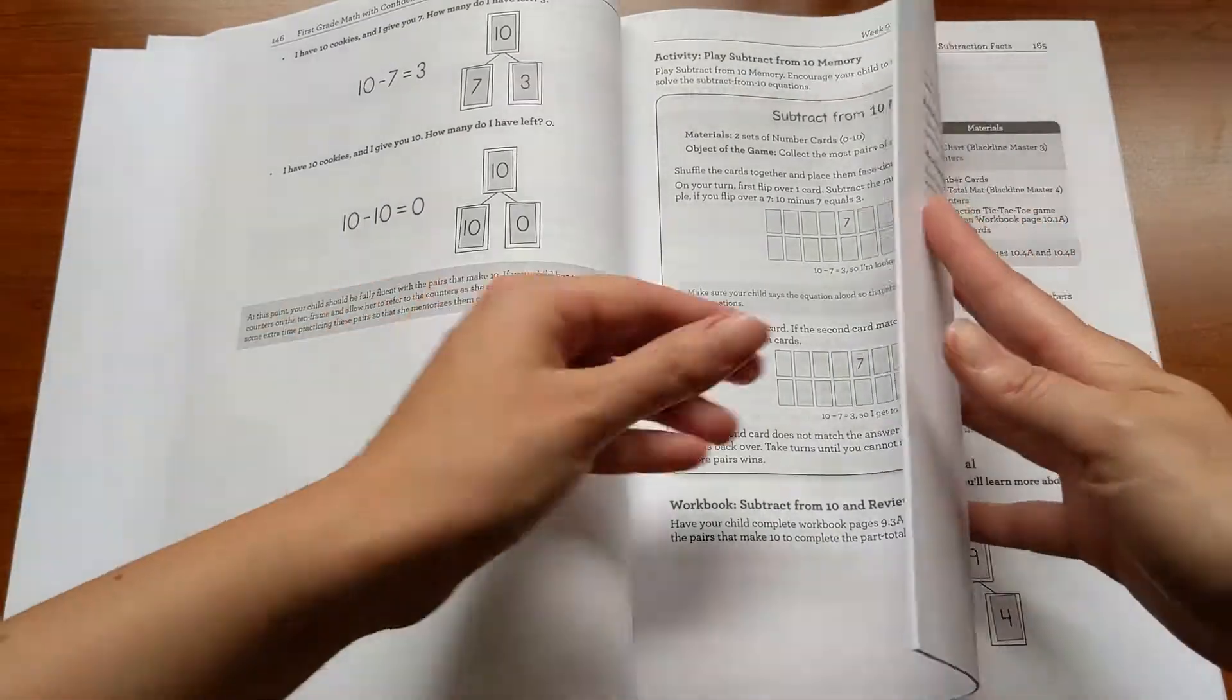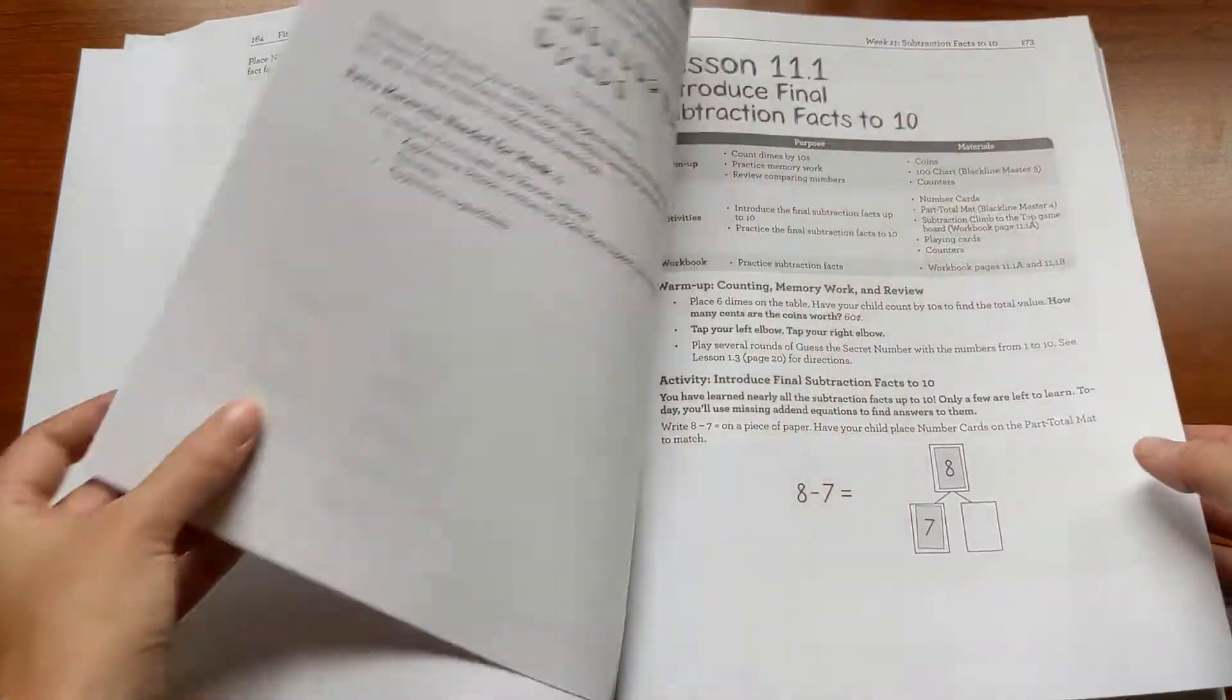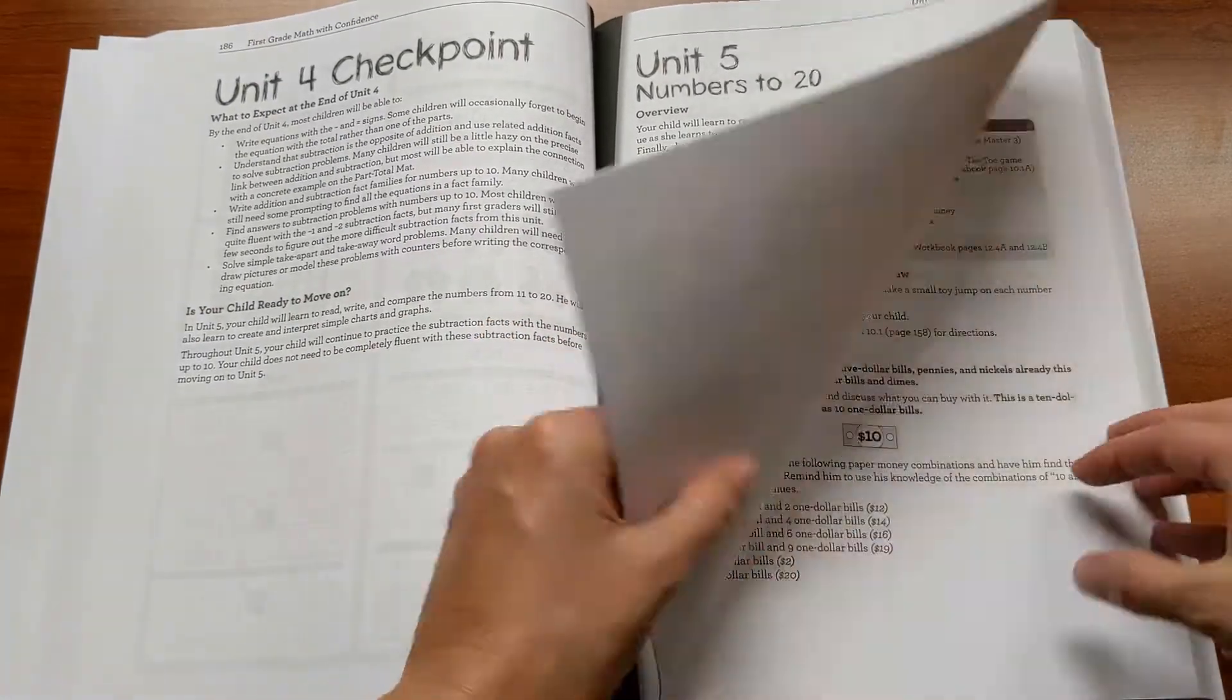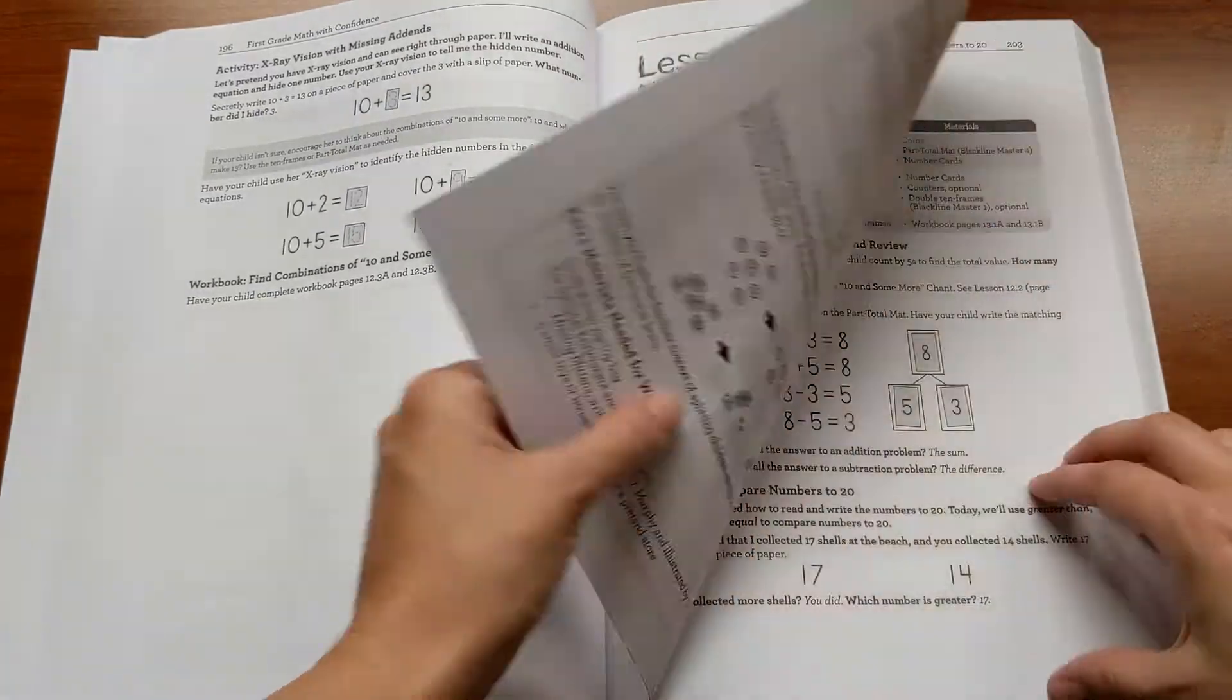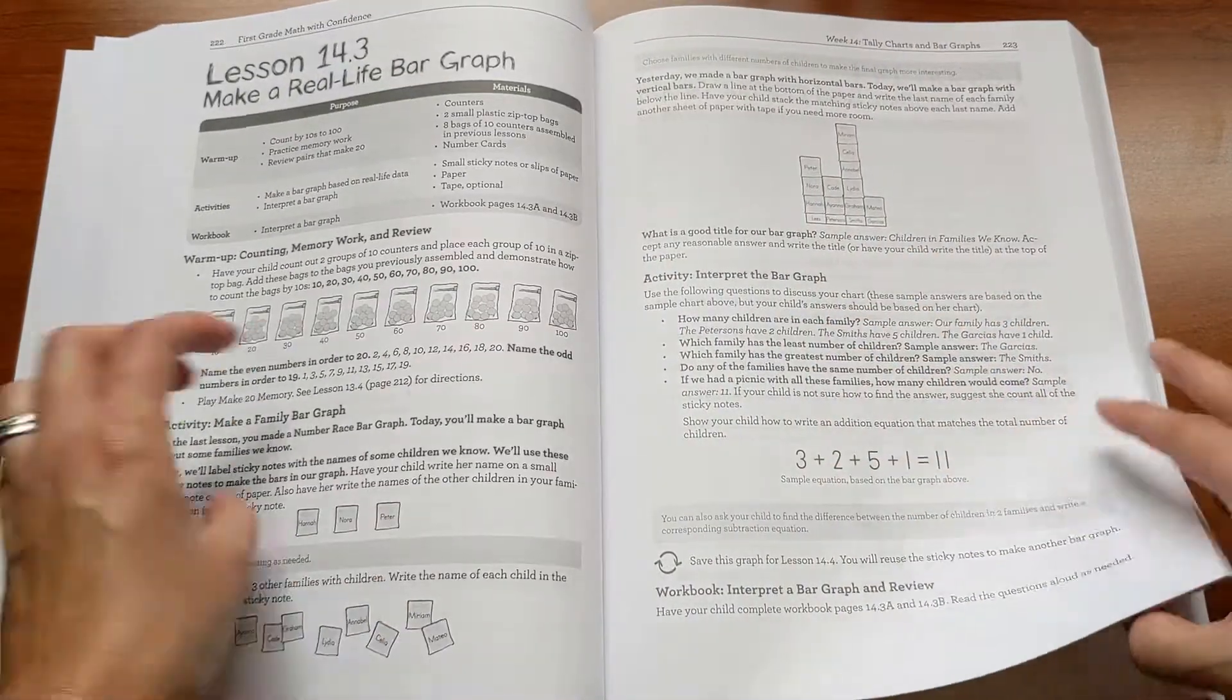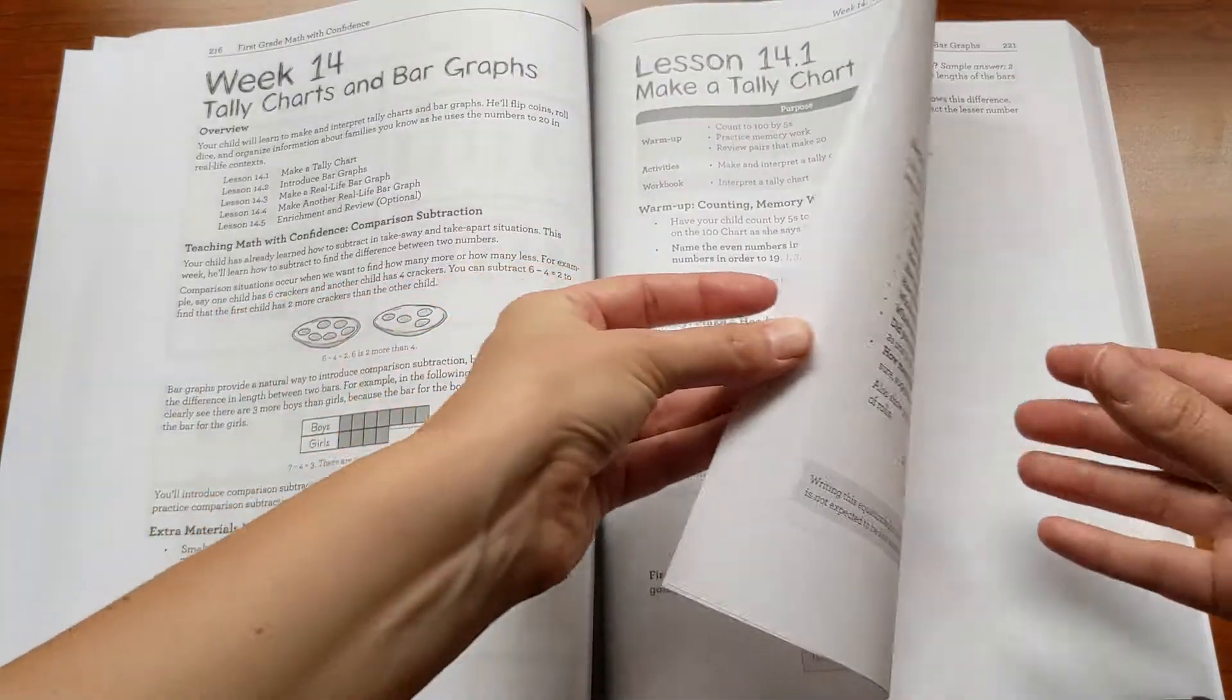And as we move through, you'll see that it goes from basics—addition and subtraction facts—but then starts to get more complicated as you get through the year. Working on understanding place value and numbers to 20. Working with money and comparing numbers to 20. Making bar graphs. This is a real fun one, a real favorite for a lot of kids.